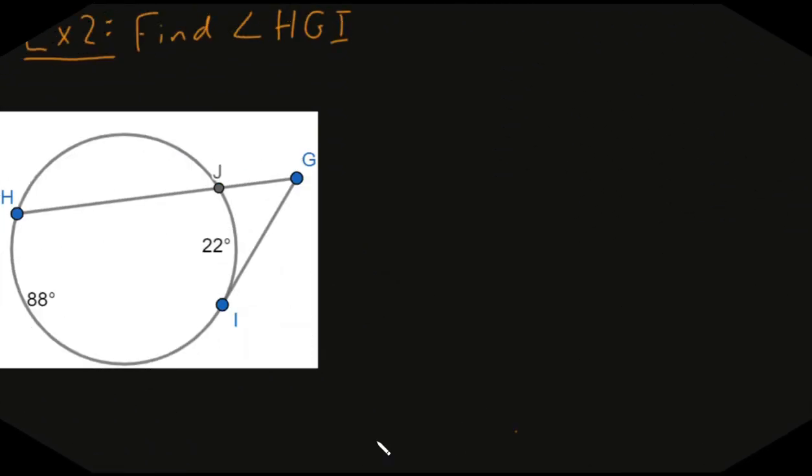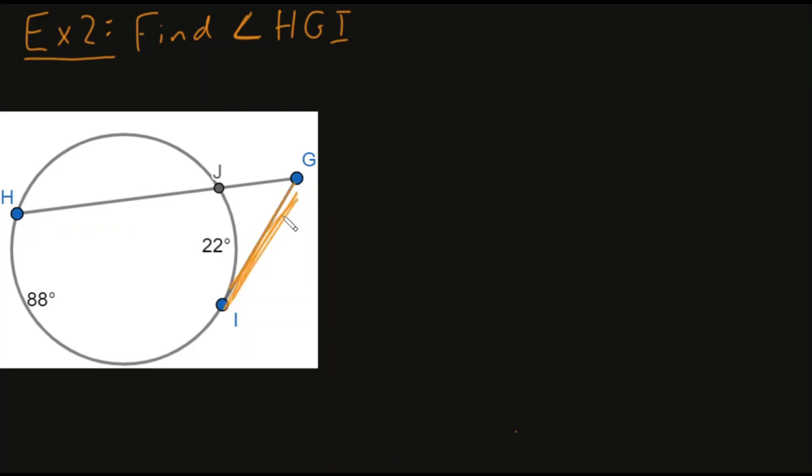All right. Now, for example two, we want to find the measure of angle HGI. Now this might look a little bit different to you from our previous one. The reason being that this line right here is not a secant, it's a tangent. It only touches the circle in one place. And of course, this line is still a secant, which we are pretty familiar with.